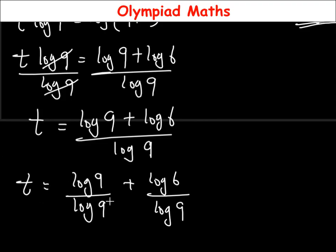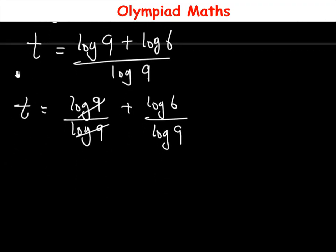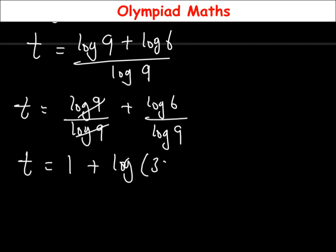We can still simplify the value of t. We're going to have t equal to log 9 over log 9, then plus log 6 over log 9. Log 9 divided by log 9 gives 1. So t is equal to 1 plus log 6 over log 9. Now log 6 can be written as 3 times 2, and log 9 as 3 squared.